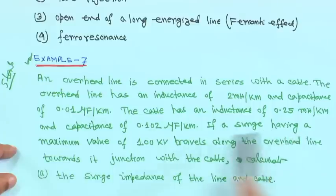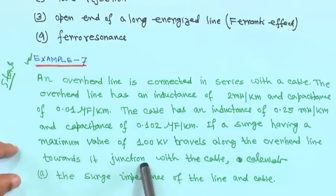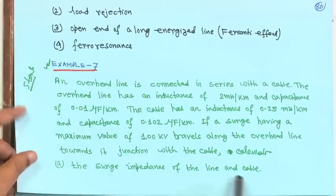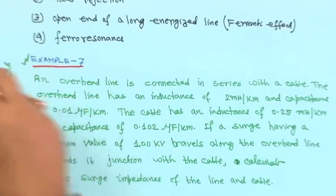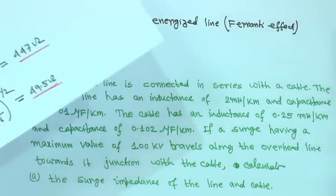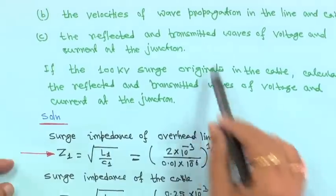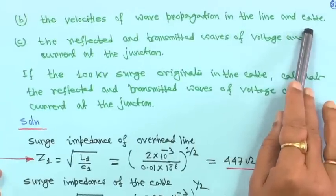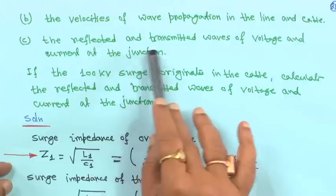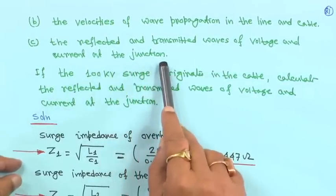If a surge having a maximum value of 100 kV travels along the overhead line towards its junction with the cable, calculate: (a) the surge impedance of the line and cable, (b) the velocities of wave propagation in the line and cable, and (c) the reflected and transmitted waves of voltage and current at the junction.